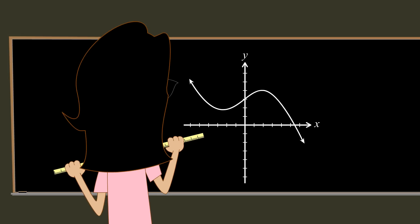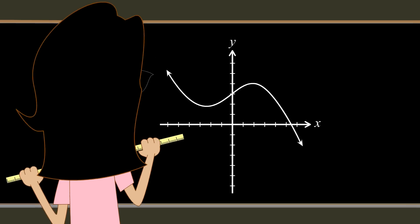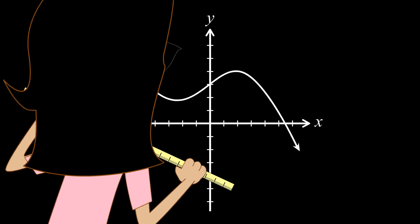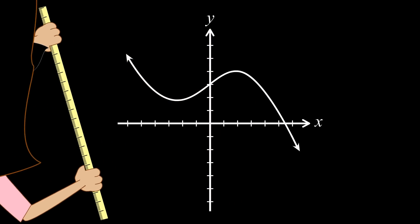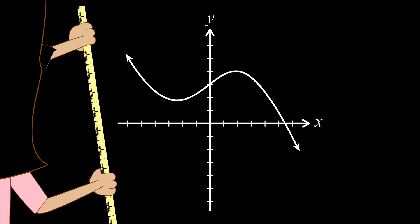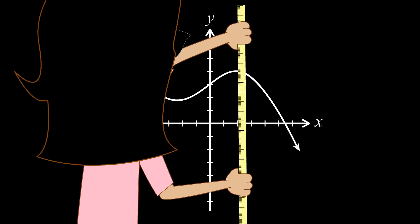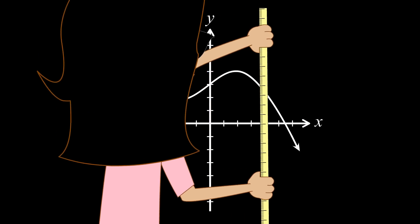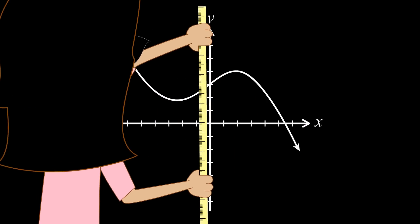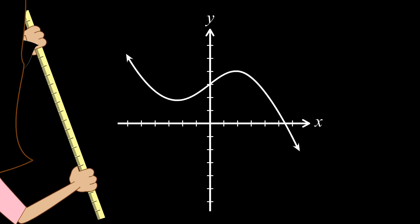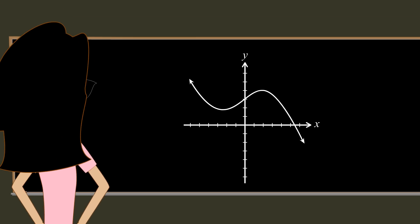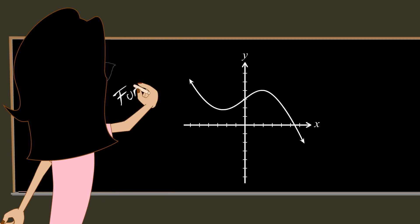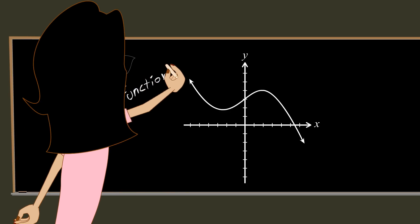To use the vertical line test, take a ruler and move it from one end of the x-axis to the other while keeping it parallel to the y-axis. If the ruler intersects the graph more than once for any value of x, the graph does not represent a function. On the other hand, if the ruler never intersects the graph more than once for any value of x, it does represent a function.